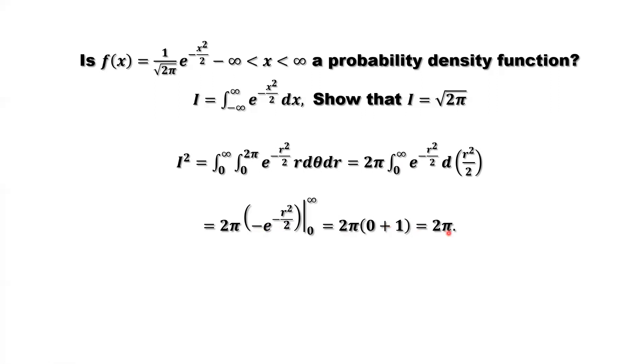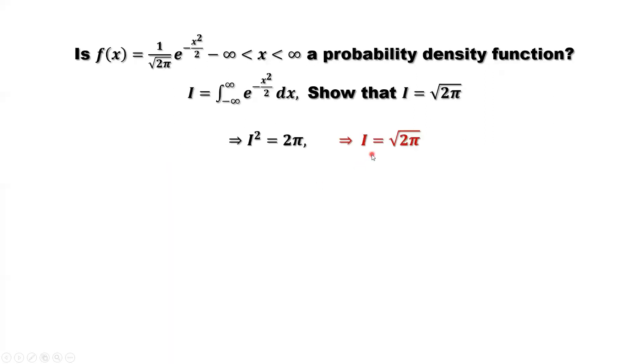What we have done? We have done I² equals 2π. What do we want? We want to prove I equals square root of 2π. Here, we have the result for I². Take the square root on both sides. We have this result. We have done this. This is the proof.